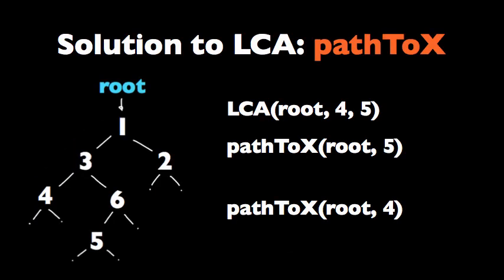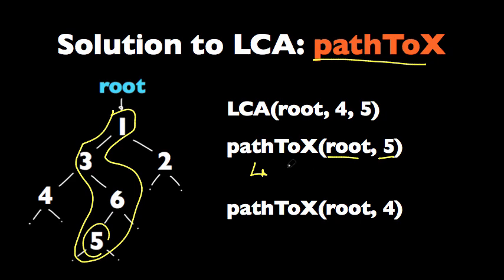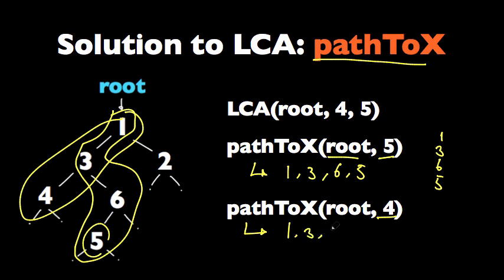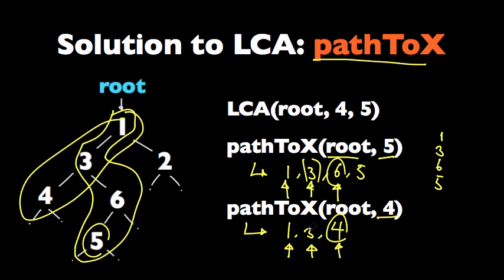Now, the key to implementing this solution is the function path_to_x. It takes the root and the element that we're looking for — x, or five in this case — and it returns a stack of this path. So it would look like: one, three, six, five for the path to five, and one, three, four for the path to four. Given these two paths, we look at each element at a time and see which ones are the same until we find different elements — six and four — and we stop right there and return that last common element as the LCA.